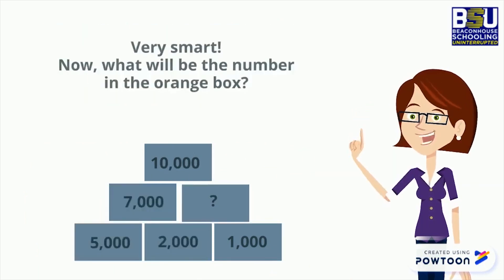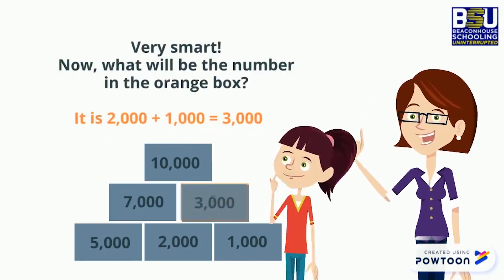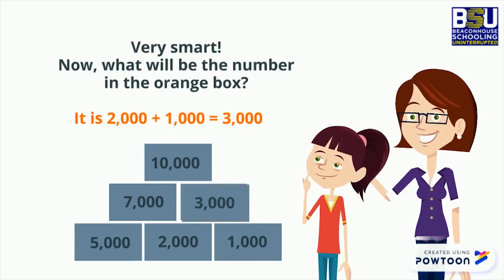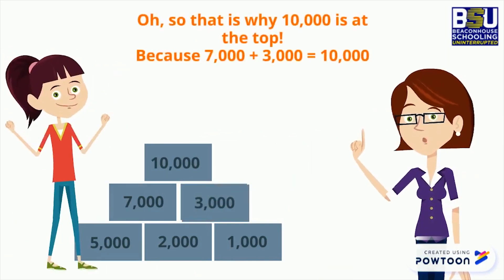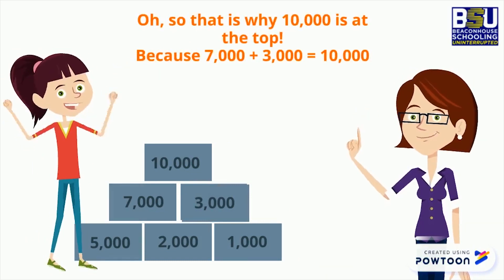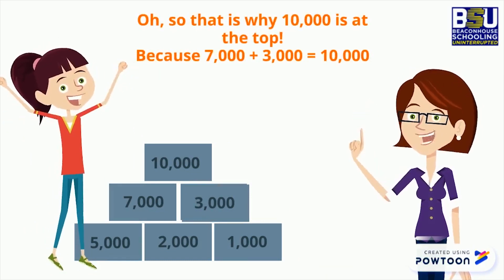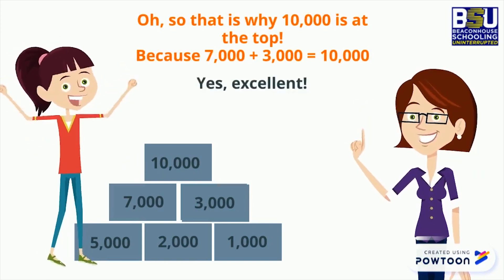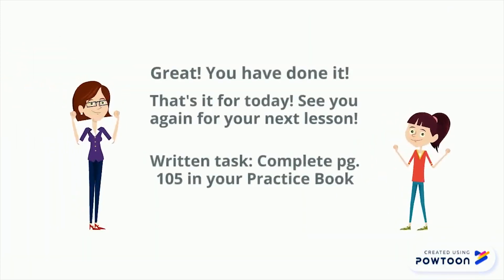Very smart. Now what will be the number in the orange box? It is 2,000 plus 1,000 equals 3,000. Oh, so that is why 10,000 is at the top. Because 7,000 plus 3,000 equals 10,000. Yes, excellent. Great, you have done it.